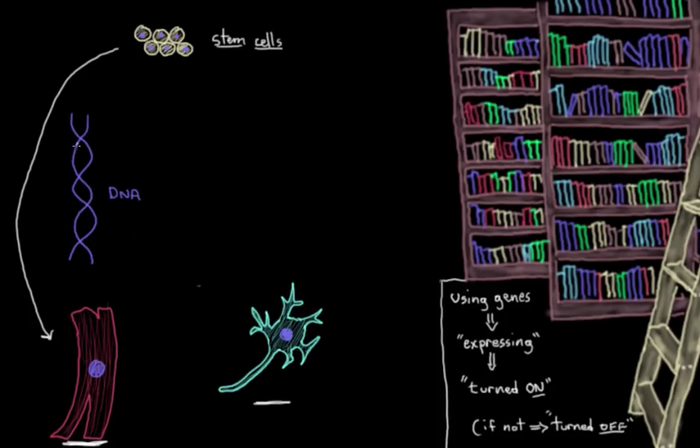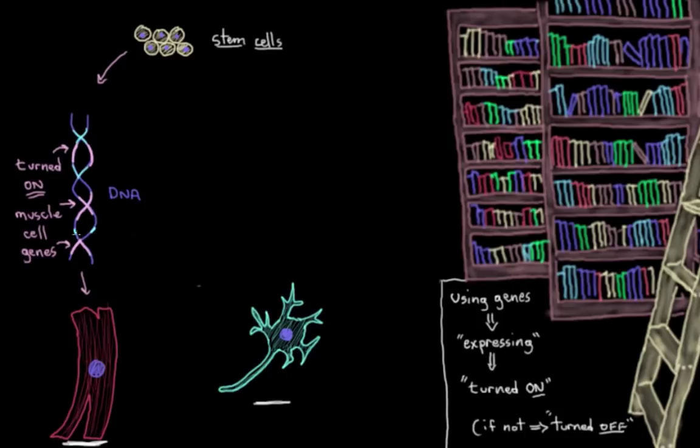So here's its DNA, and I'm highlighting its muscle cell genes that it turned on right now. And it also turned off some other genes. So by turning on its muscle cell genes, now proteins get made within the cell that changes how the cell looks.